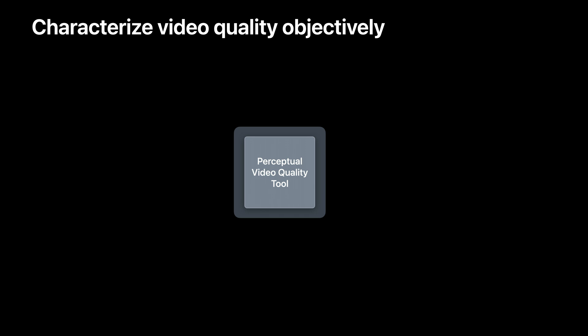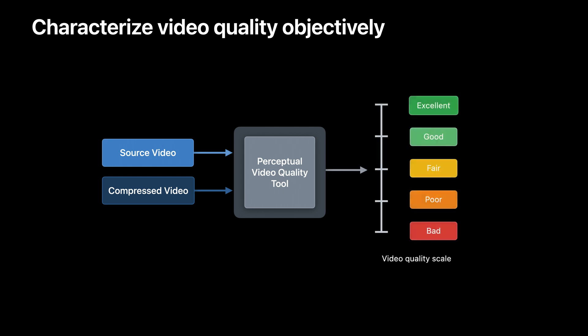There's another way. What we need here is an objective way to characterize video quality so that we can automate the process for speed and scalability. In such a setup, the perceptual video quality tool will take the compressed video and the source video as input and output a video quality score. This score can be a floating point number in the range of one to five and mimic how real people would have rated the compressed video.